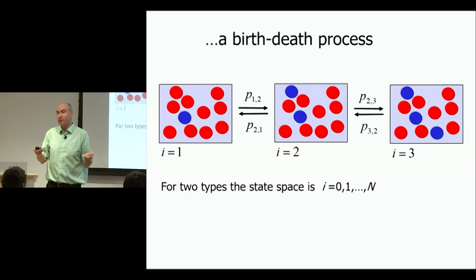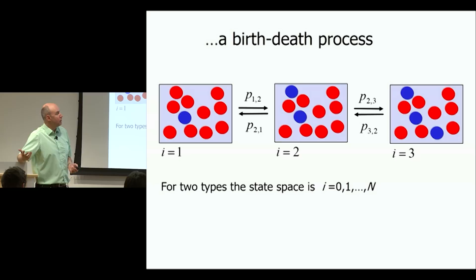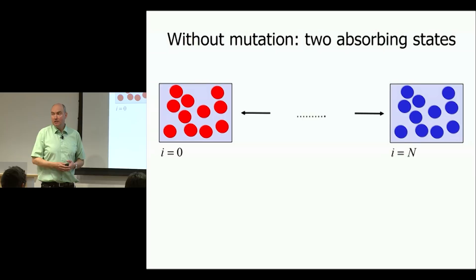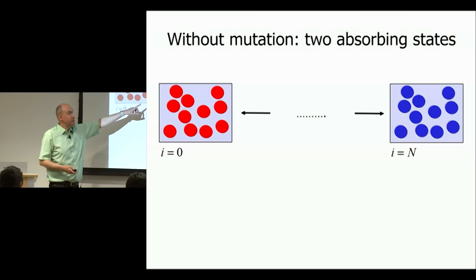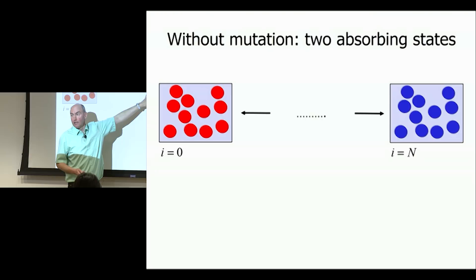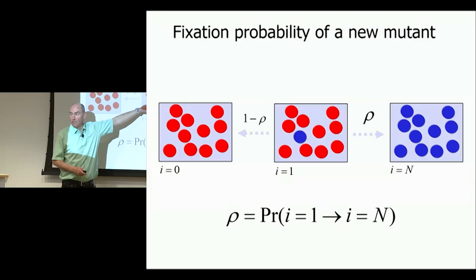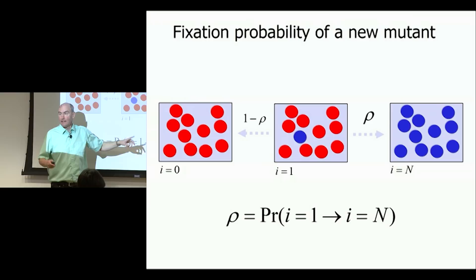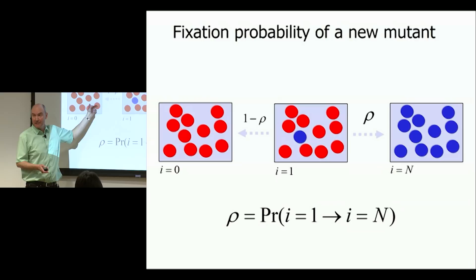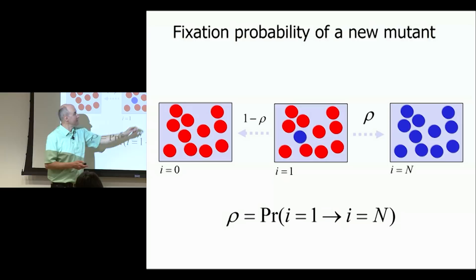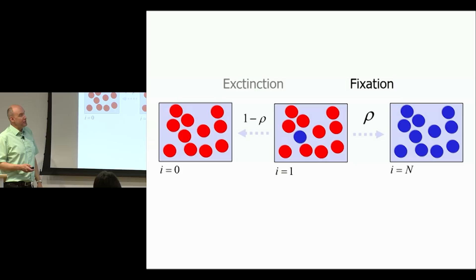Without mutation there are two absorbing states: the population can be either all red or all blue, and nothing changes once you reach them. A typical question is: we introduce a new mutant and want to know the probability that this mutant reaches fixation. If we wait long enough, either the new mutant dies out — that's extinction — or it wins the whole world — that's fixation. We are interested in calculating these probabilities.